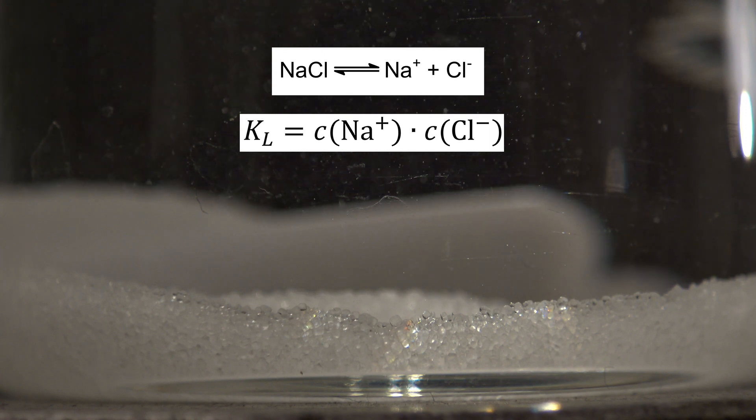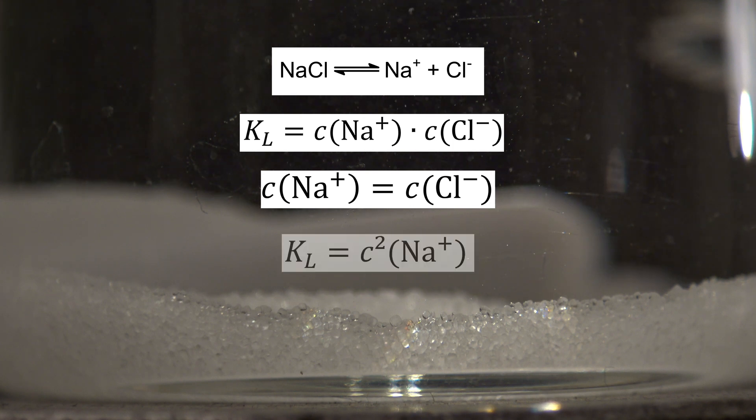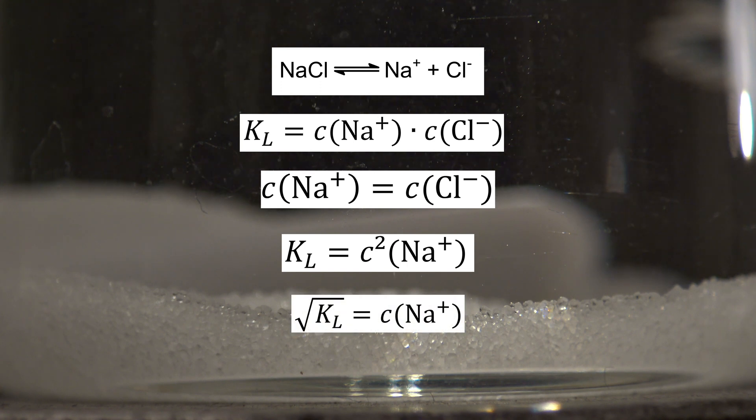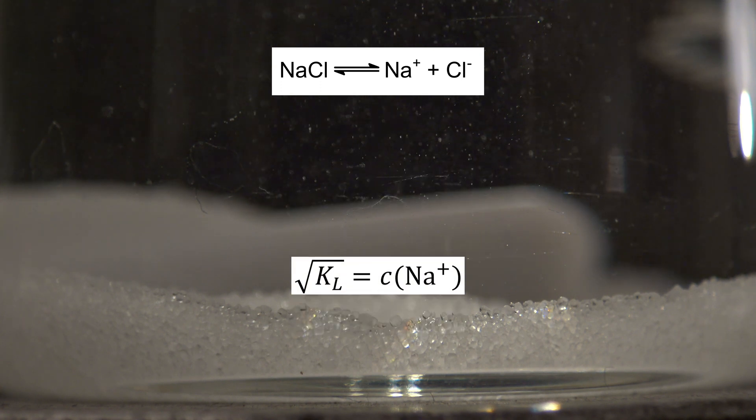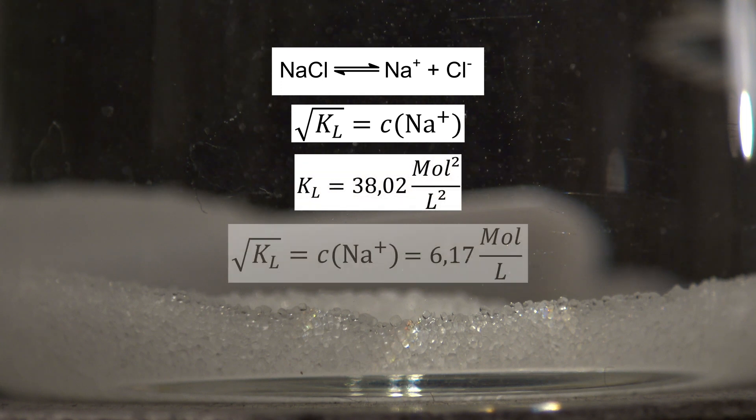In this example, the concentration of the sodium and chloride ions are the same. So the solubility product can be written down as follows and rearranged for the concentration of the sodium ions. With the value of the solubility product, the concentration of the sodium ions can be calculated.